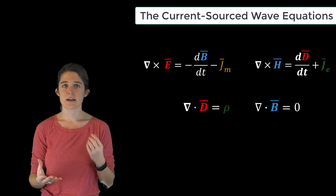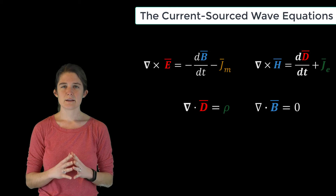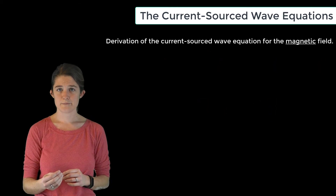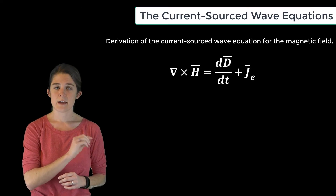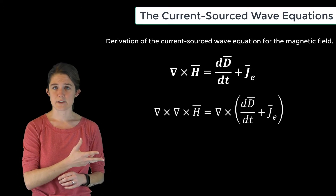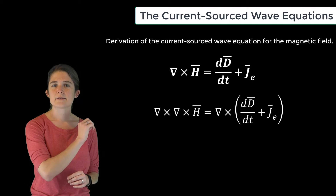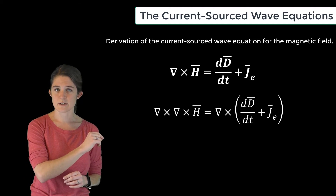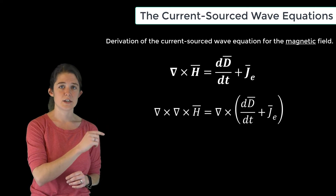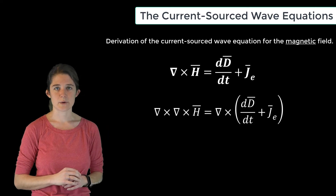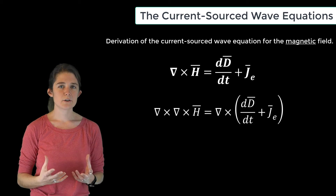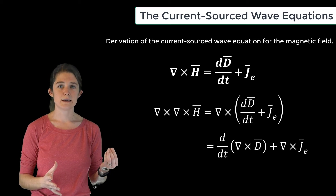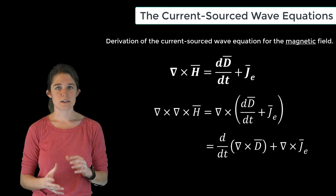We can use these two laws together with Gauss's law and the solenoidal law to derive current-sourced wave equations for both the electric and magnetic fields. Let's start by finding the current source wave equation for the magnetic field. We'll start with the statement of Ampere's law and take the curl of both sides of the equation. This gives us del cross del cross H on the left-hand side, and del cross d/dt plus j sub e on the right-hand side. Since the curl function is distributive, we can rewrite this as d/dt del cross D plus del cross j sub e.